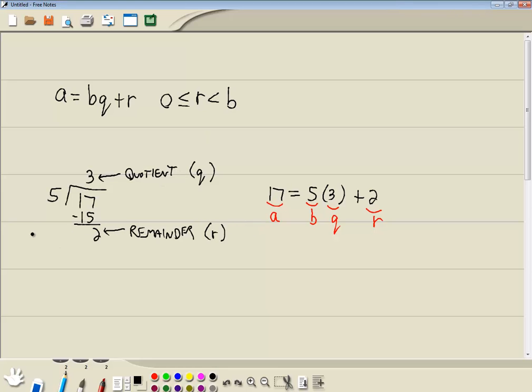So your remainder has always got to be less than B. Because remember, B is what we're dividing by. So this just logically follows. Now there's specific cases.